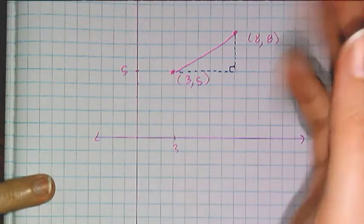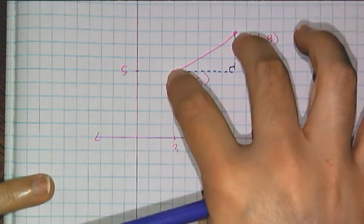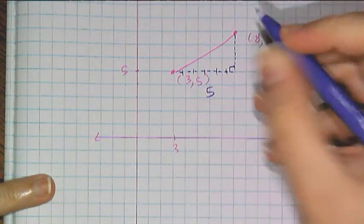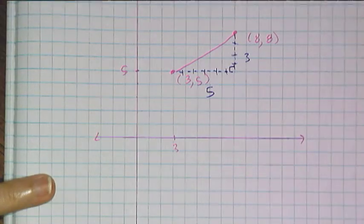And now I can use the Pythagorean theorem to find the distance between those two points. And so I have one, two, three, four, five there and one, two, three there.